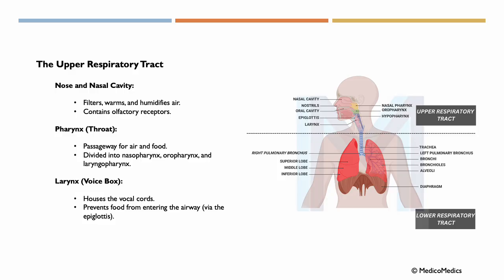Now let's delve deeper into the upper respiratory tract. We have the nose and the nasal cavity, whose function is to filter, warm, and humidify air, and it contains olfactory receptors. Further in, we have the pharynx, or the throat — this is the passageway for both air and food. It is further divided into the nasopharynx, the oropharynx, and the laryngopharynx.